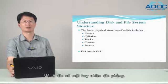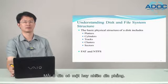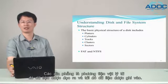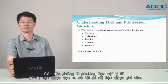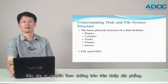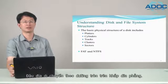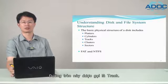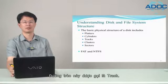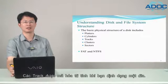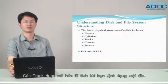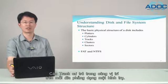Each disk has one or more platters. Platters are the physical media from which data is read and to which data is written. The disk head travels in a circular path over the platters. This circular path is called a track. Tracks are magnetically encoded when you format a disk.